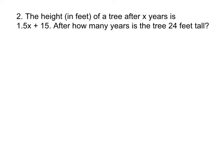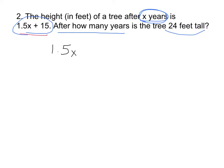The first thing you have to do is write an equation. 1.5x plus 15 represents the height of the tree. x stands for years, so we need to find x when the tree is 24 feet tall. 24 feet also represents the height of the tree, so our equation is 1.5x plus 15 equals 24.